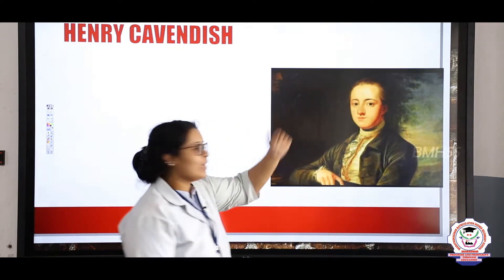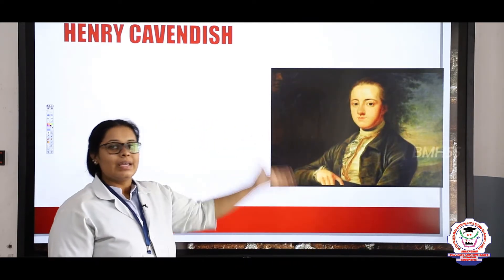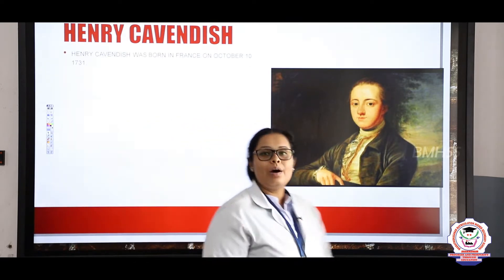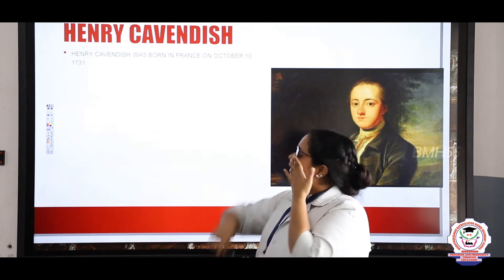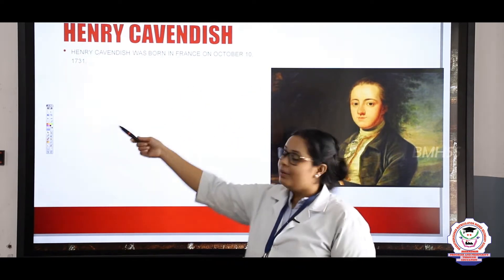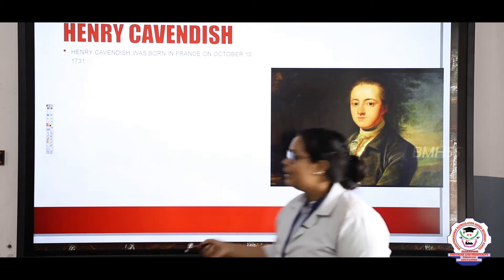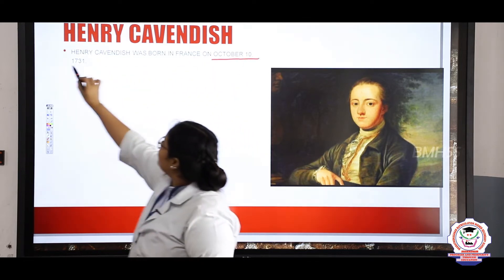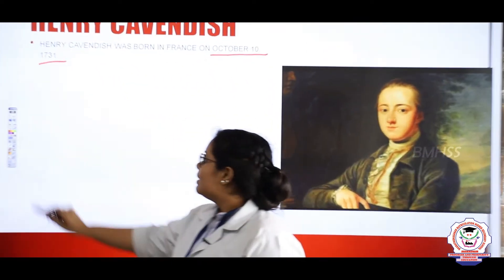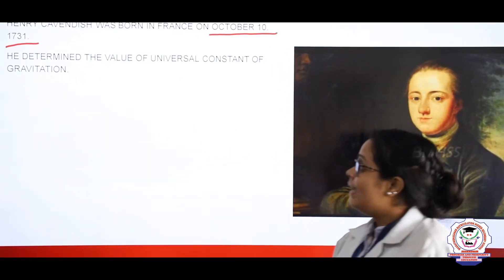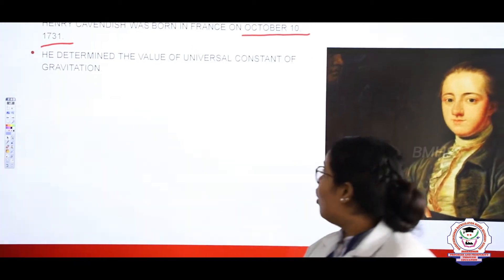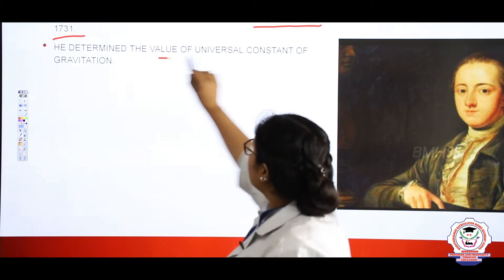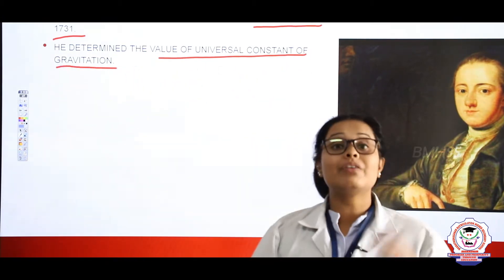You can see his face here — he is Henry Cavendish. He was born in France on October 10, 1731. He was the person who described the value of the universal constant of gravitation, which helped Newton find what the gravity between two different masses could be.